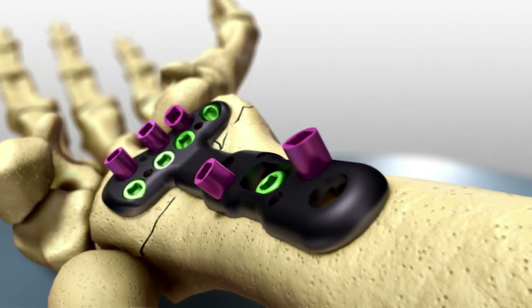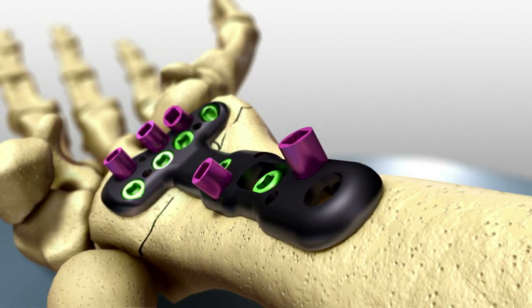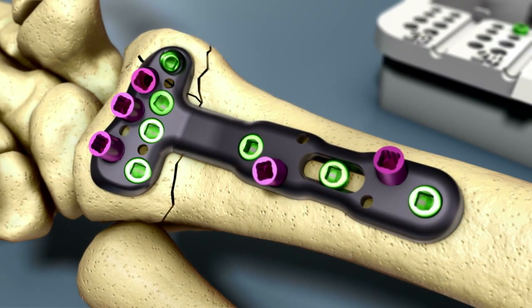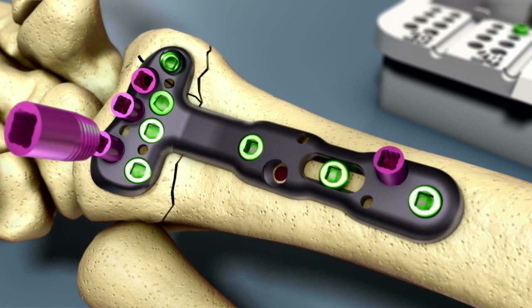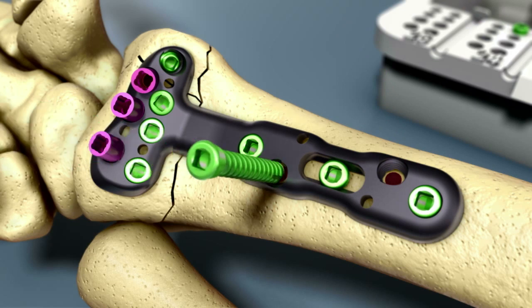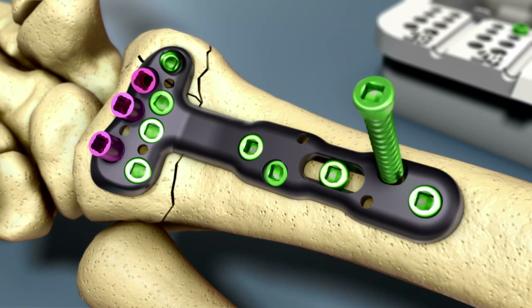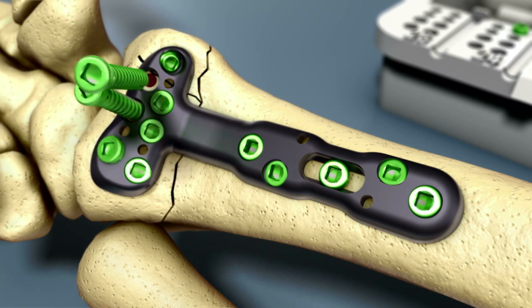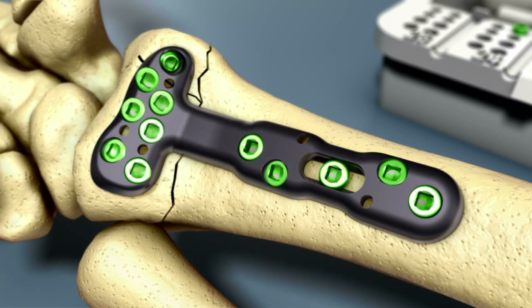Next place the desired screws in the shaft of the plate. Then drill, measure, and fill the most distal screw holes. The most distal row of screws should be placed last. If additional fixation is needed in the shaft of the plate, install the appropriate locking screws in the threaded holes.